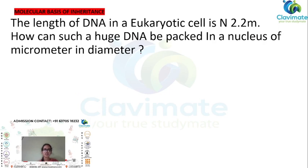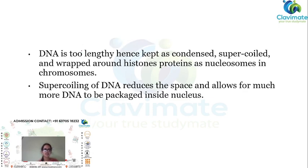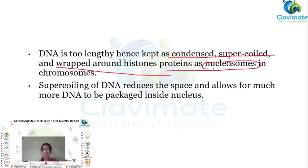The length of DNA in a eukaryotic cell is 2.2 meters. How can such a huge DNA be packed in a nucleus of micrometer diameter? As DNA is very lengthy, it is kept in a condensed, supercoiled form and wrapped around histone proteins as nucleosomes. Supercoiling reduces the space and allows much more DNA to be packaged inside the nucleus.